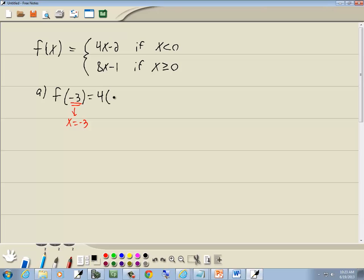So I've got 4 times negative 3 minus 2. 4 times negative 3 is negative 12 minus 2, which gives us negative 14.